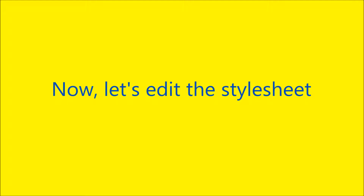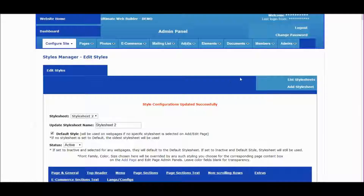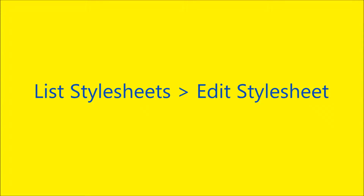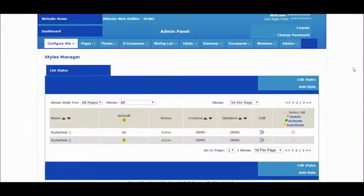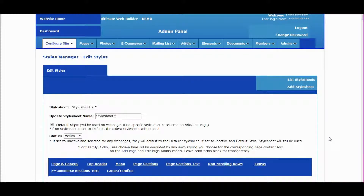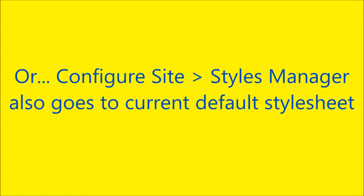Now let's edit the style sheet we just created. Switch back to admin panel and click on the list style sheets link. Here are the list of saved style sheets — click on the edit button for the one you want to edit.